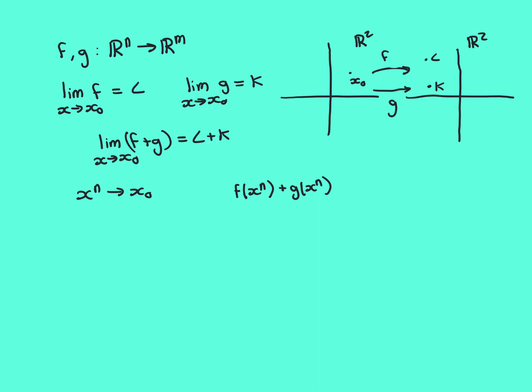Nothing we did required it to be a specific domain sequence, so the argument holds for all domain sequences. Hence the sequence characterization is fulfilled: the limit as x approaches x0 of f+g exists and equals l plus k.